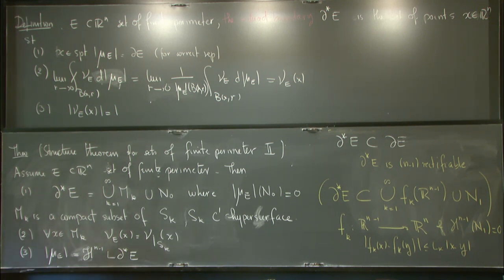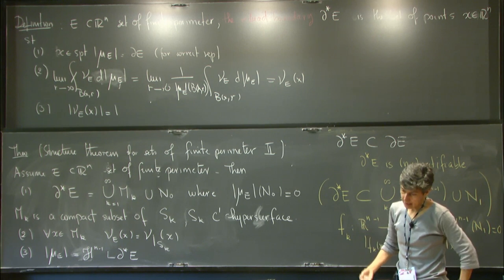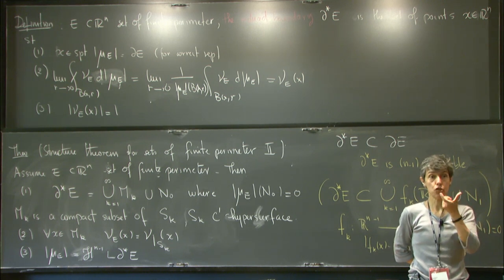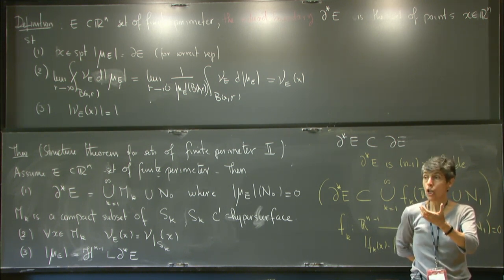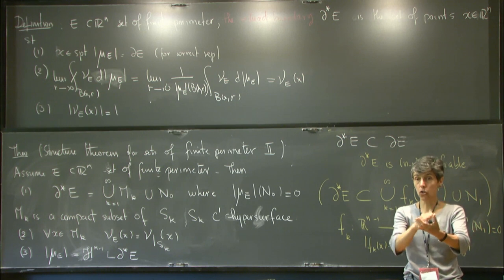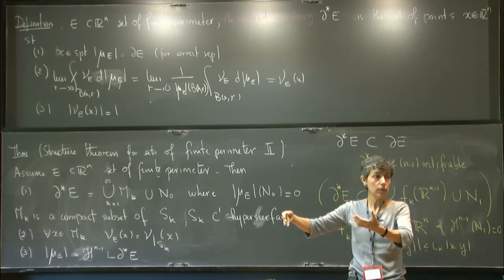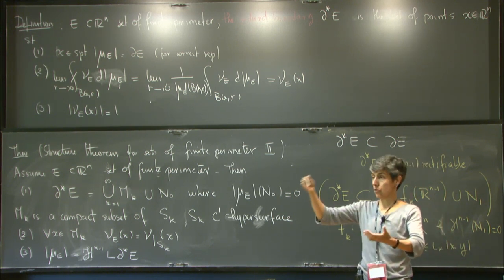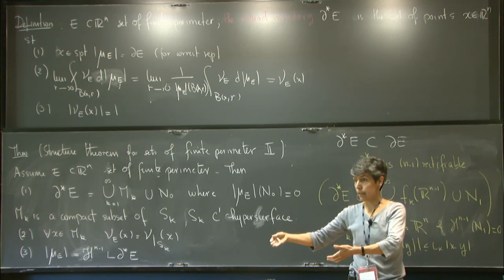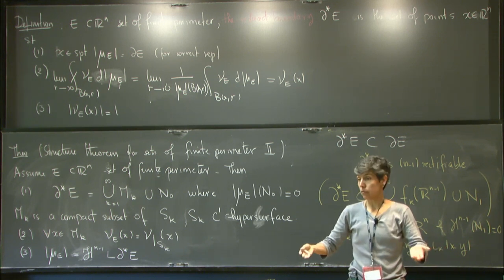One thing that is going to play a role is a compactness statement. To motivate it: we want to minimize something — the perimeter of a set under some circumstances. We take a sequence of sets of finite perimeter whose perimeters approach the minimum, and we want to say the sets converge to something which is a set of finite perimeter and whose perimeter is that minimum. So we need a compactness theorem.